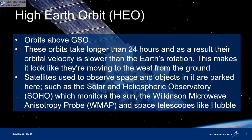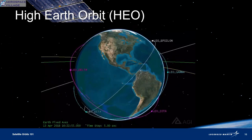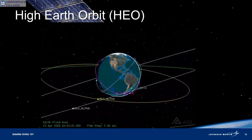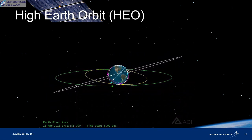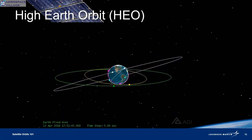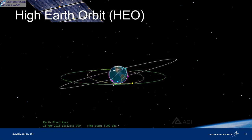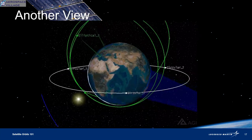Lastly, there's HEO, or high Earth orbit. This is anything beyond the geosynchronous MEO threshold. Naturally, these orbits take longer than 24 hours, and a vehicle in one of these is actually moving slower than the Earth's rotation. Because it's moving slower than the Earth's rotation, it would look to us as though the satellite were moving to the west — but it's not retrograde. This type of orbit is where we park space telescopes and long-range monitoring satellites. Now let's put it all together — here's a view where you can see both circular and elliptical orbits at varying distances.